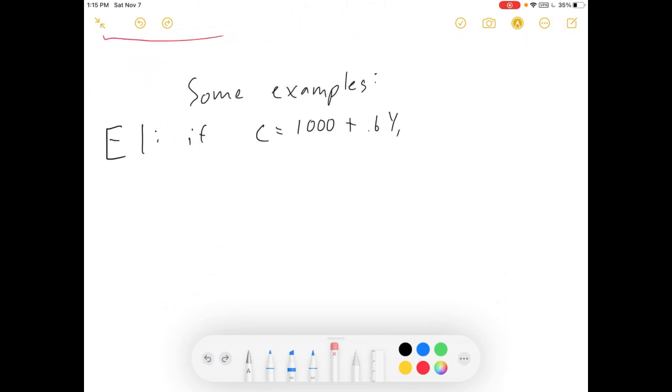Now, if consumption is equal to 1,000 plus 0.6Y, what is C when Y equals 100? Or when Y equals 500? Or when Y equals 1,000?